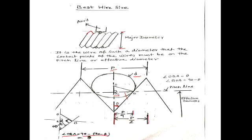That is equal to theta. And what will be angle OBA? It will be 90 minus theta. That means this angle will be theta and this angle will be 90 minus theta.